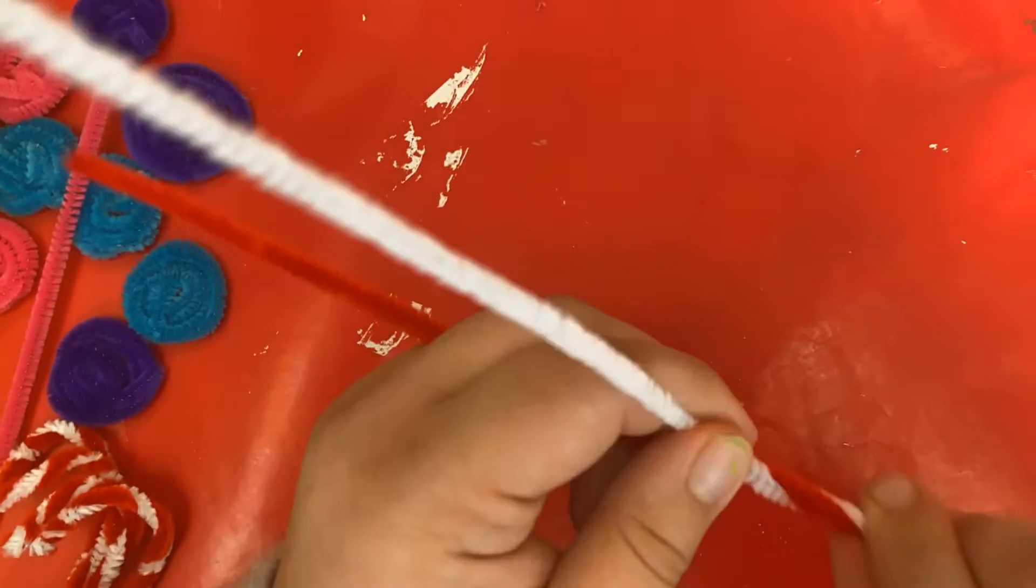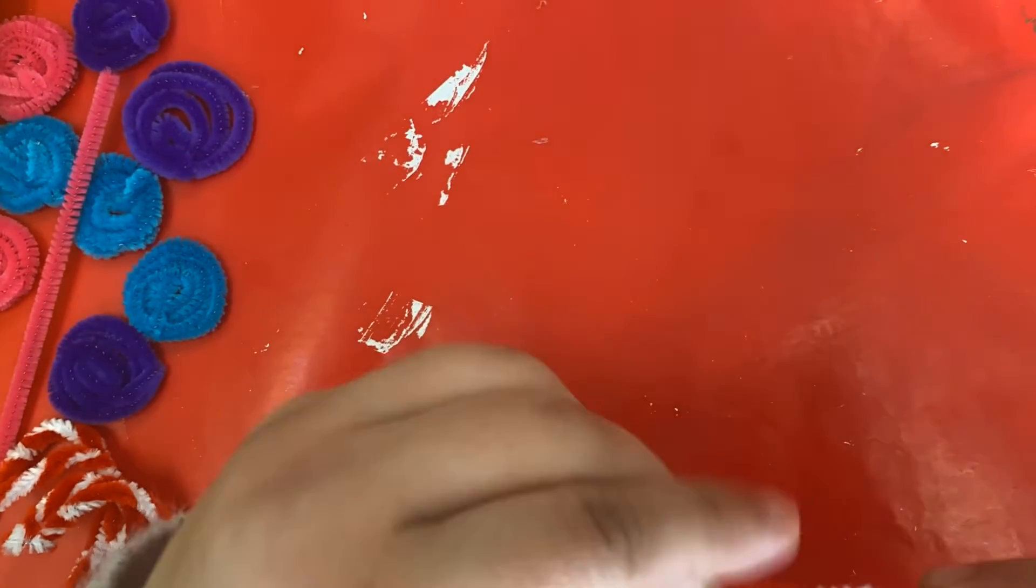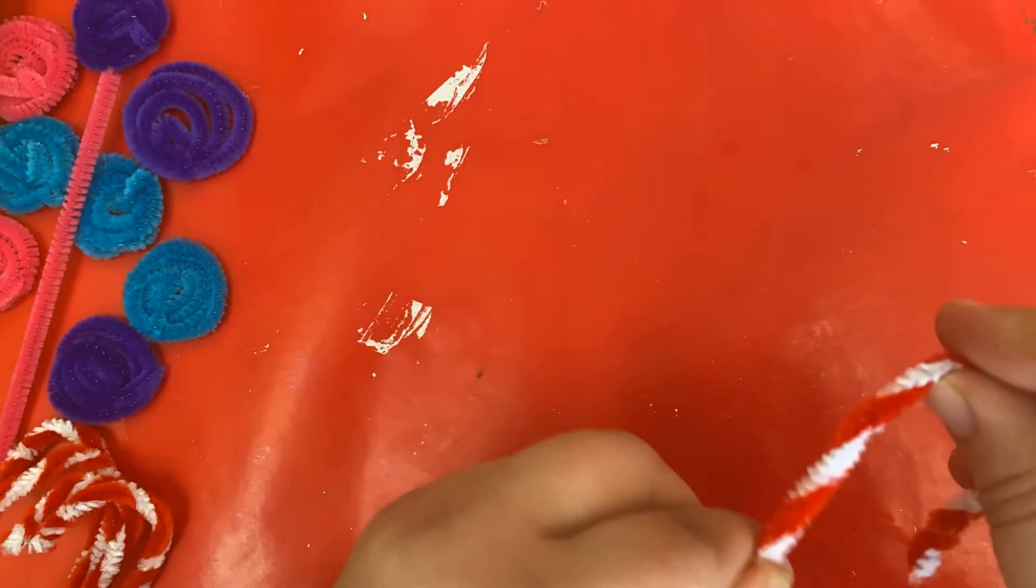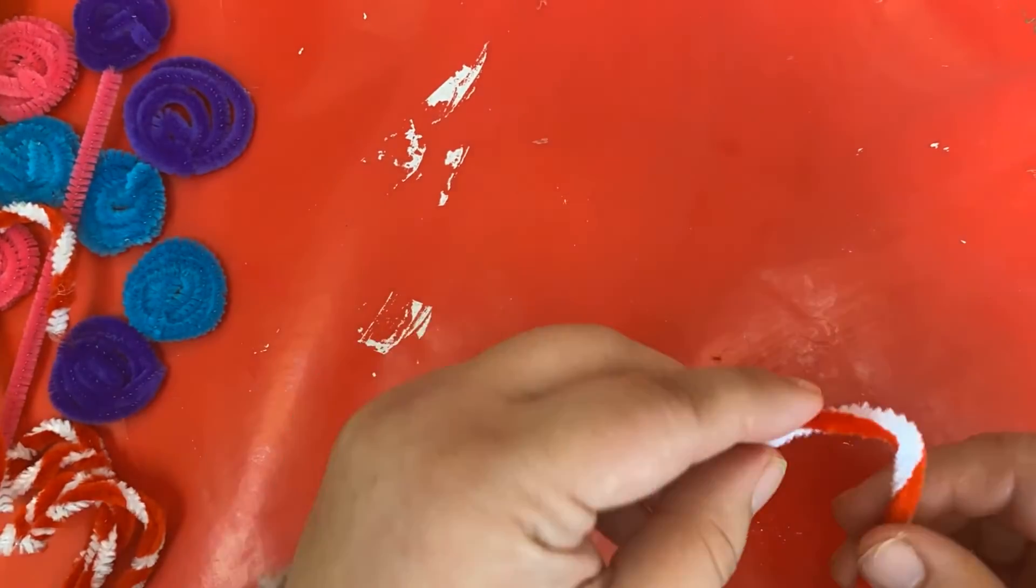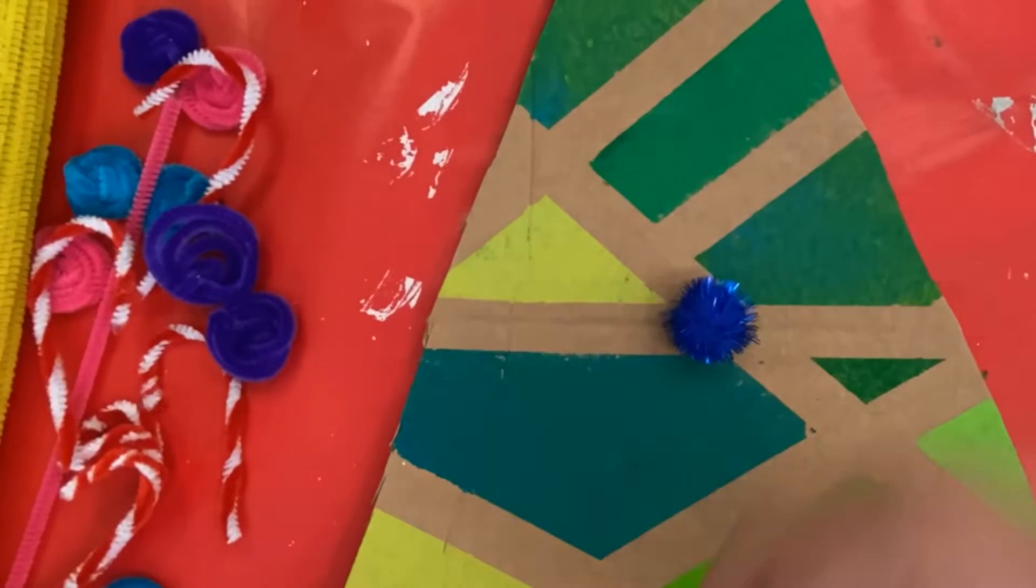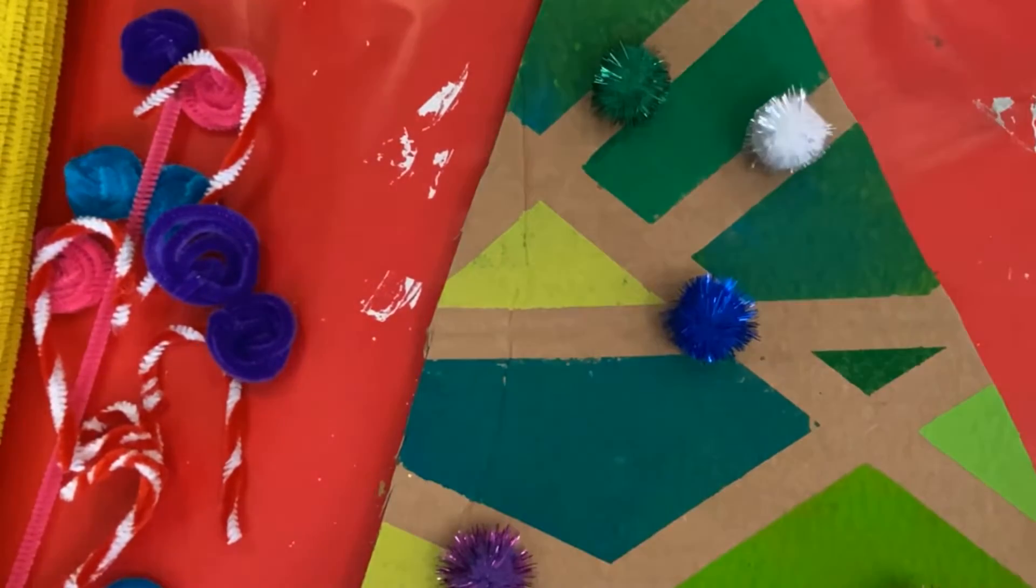And to make a candy cane, what you want to do is twist two pipe cleaners, preferably red and white, around each other and then form it into a candy cane and give it a little snip. You should get two candy canes for each two pipe cleaners.